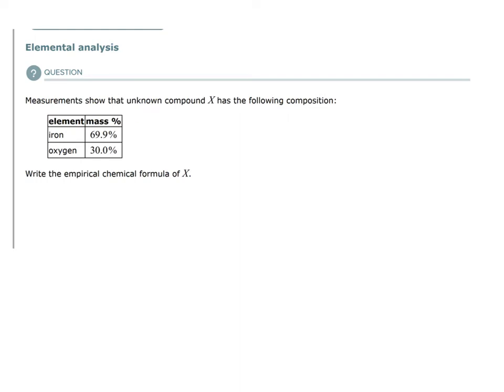We know that this unknown compound, through elemental analysis, is 69.9% by mass iron and 30% by mass oxygen. We are asked to determine the empirical formula of this unknown compound X, and we can do that from this bit of information.